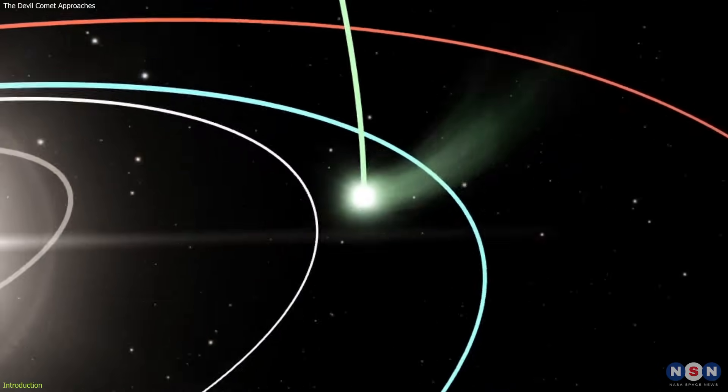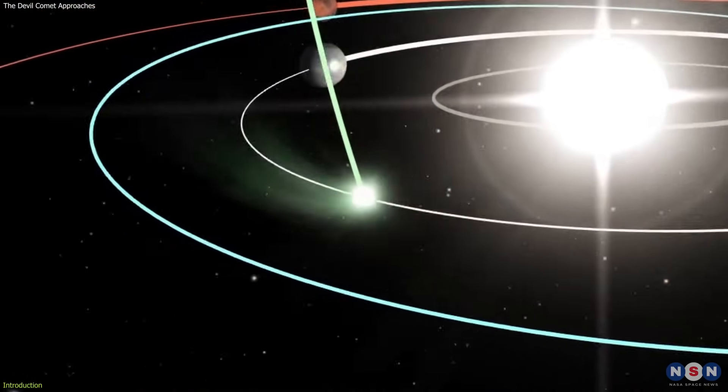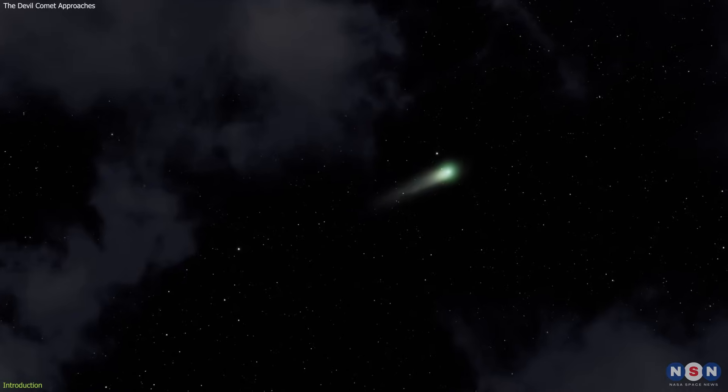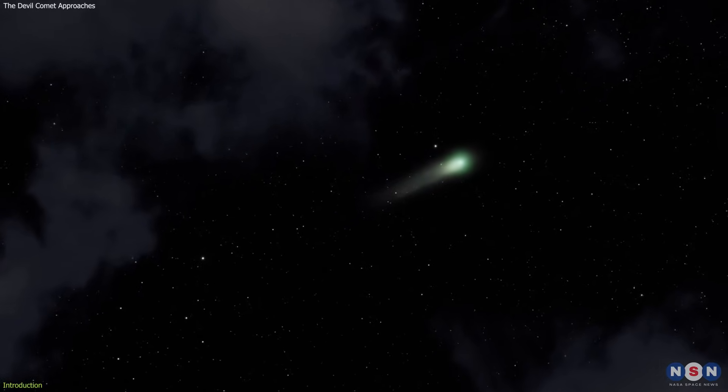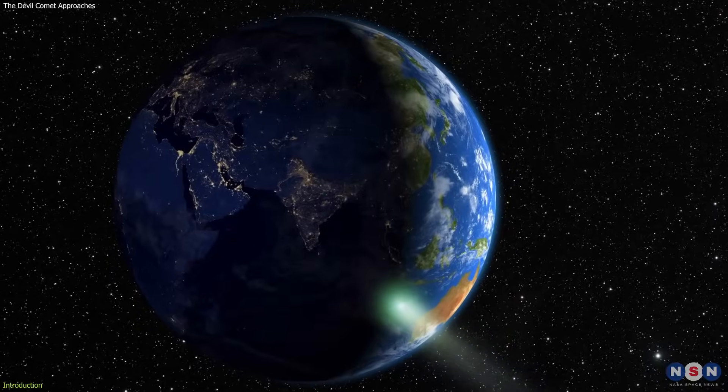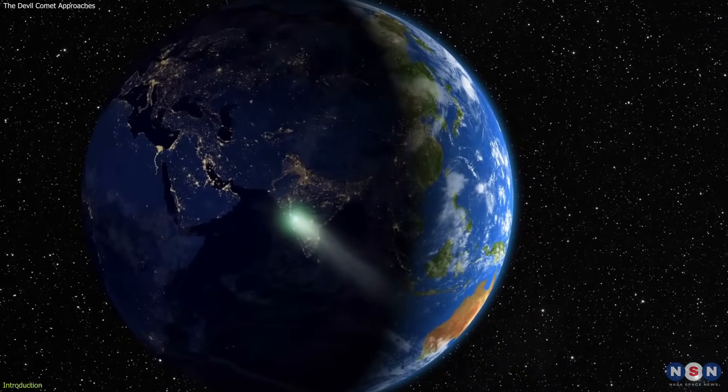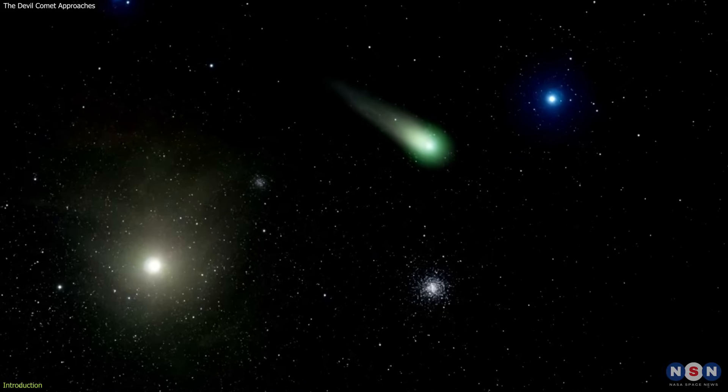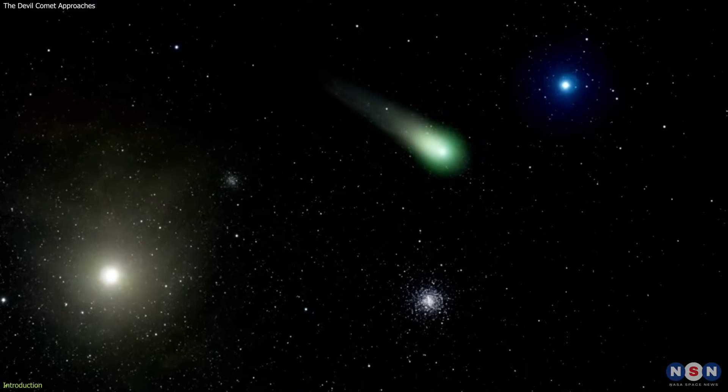As Comet 12P Pons-Brooks hurtles toward the Sun, it promises to adorn our skies with its otherworldly glow. But what secrets does this cosmic wanderer conceal, and why is its forthcoming visit generating such anticipation among stargazers?